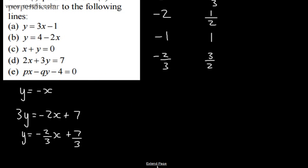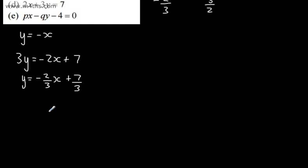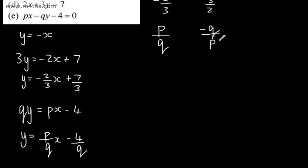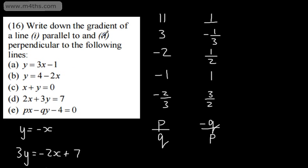For the final part with qy, rearranging by adding qy to both sides gives qy = px minus 4. Dividing through by q: y = (p/q)x minus 4/q. The gradient of this line is positive p over q, therefore the perpendicular gradient will be negative q over p.